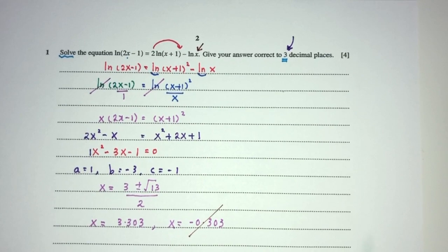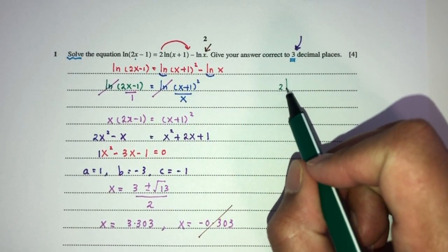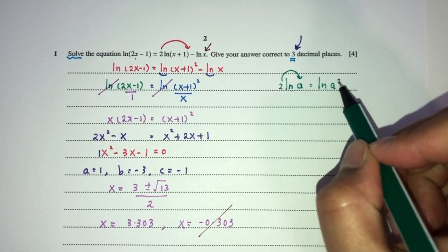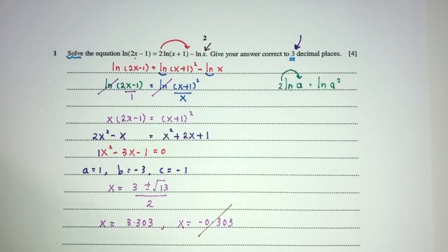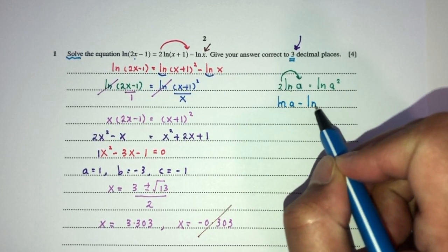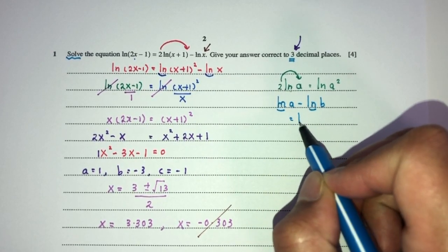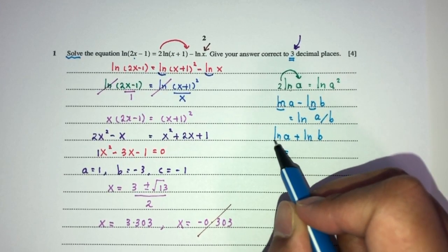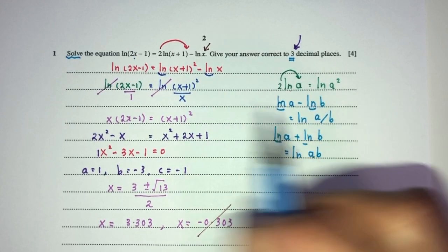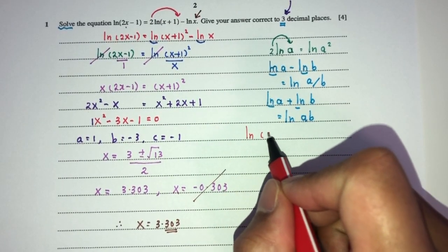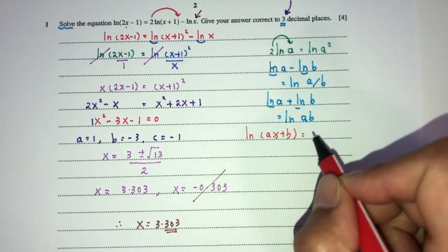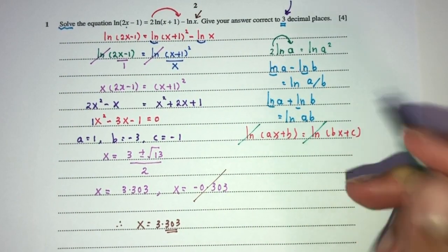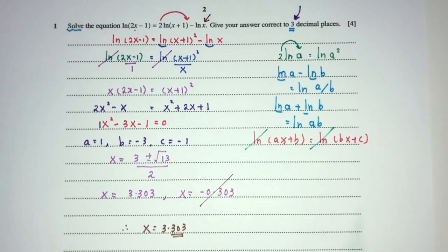A few things we have to know for log or ln. For example, 2 ln of a — by the laws of log we can send the 2 on top, same as ln of a squared. Next, when you have ln of a minus ln of b, because these two are the same base it equals ln of a divided by b. Similarly, ln of a plus ln of b equals ln of a times b. Finally, when you have ln of (ax+b) equals ln of (bx+c), you can cancel ln on both sides. This is what we used to solve question number one.